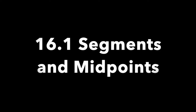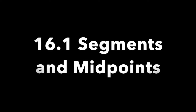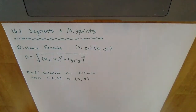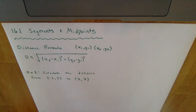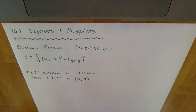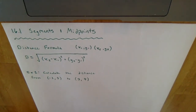We're going to jump into section 16.1, which is on segments and midpoints. Segments, which you might remember from middle school geometry, are kind of like lines except they have endpoints, so they don't go on forever — they're just parts of a line. We're going to start by looking at the distance formula.